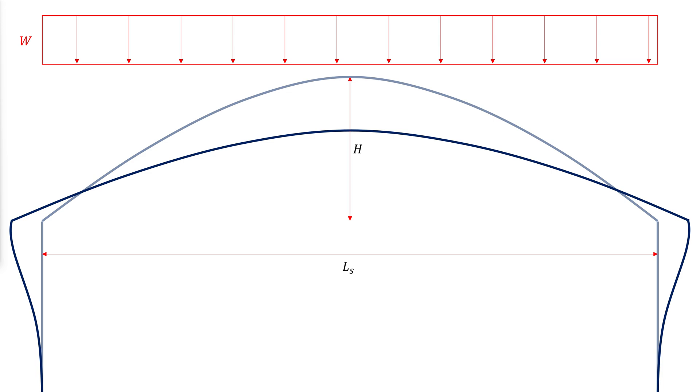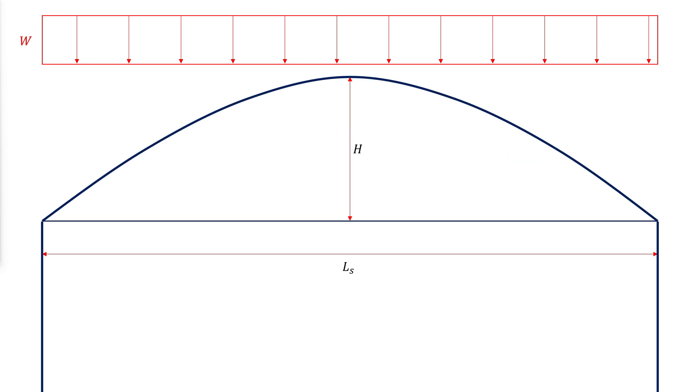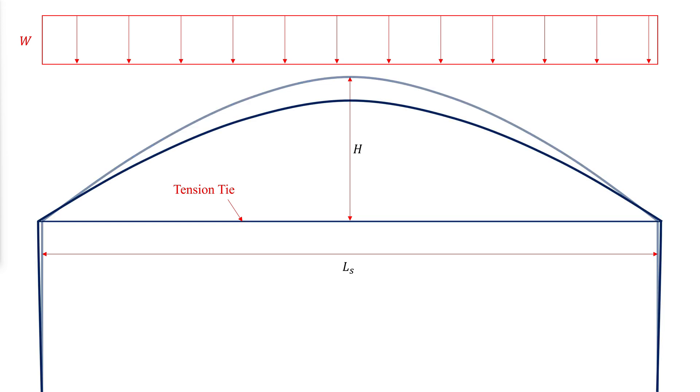Completely rigid supports are difficult to obtain in practice, and additional members are often required to provide support stiffness. In this figure, the horizontal member acts as a tension tie, preventing arc spreading.